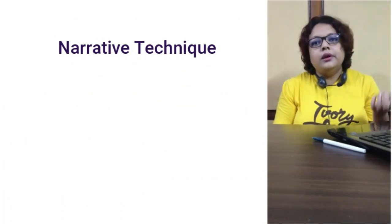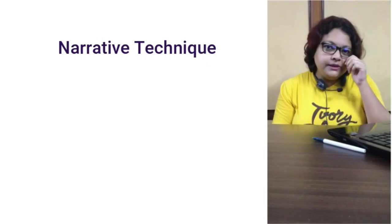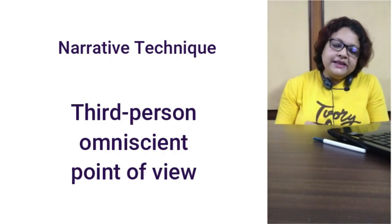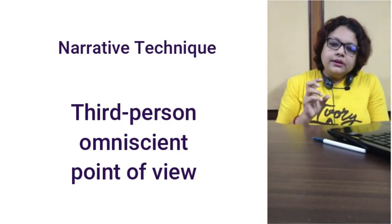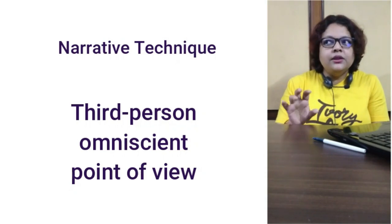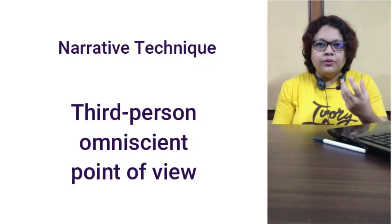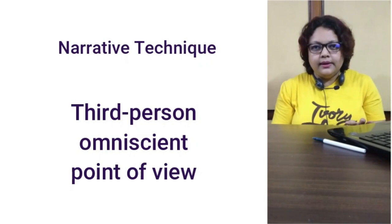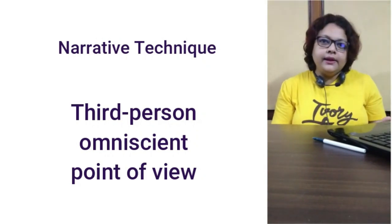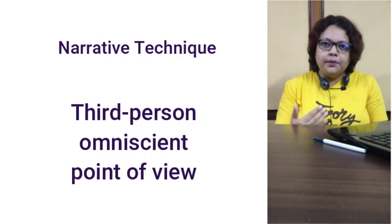A story can be told from a first person or third person perspective. This story is told from a third person omniscient perspective — omniscient meaning the narrator sees everything. The narrator is not seeing only what Baldeo sees; he also sees what happens after Baldeo leaves the house, what happens to Tembu, and what happens after Baldeo dies. It is a third person narrative because the story is narrated not from the point of view of any of the characters, but like a person talking about Baldeo and Tembu.